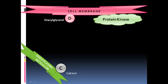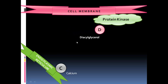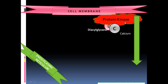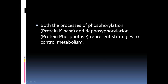In the lower left quadrant, the endoplasmic reticulum contains calcium. Diacylglycerol comes out of the cell membrane and binds to protein kinase C. Calcium then comes in and binds to the protein kinase C-diacylglycerol complex, activating protein kinase C. This activation leads to an intracellular effect, including phosphorylation of cell proteins that mediate cellular responses to hormones. Both phosphorylation via protein kinase and dephosphorylation via protein phosphatase represent strategies to control metabolism.